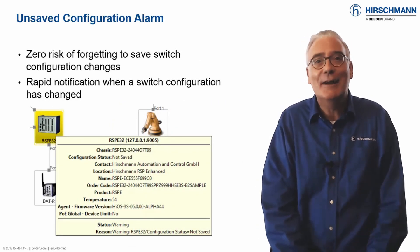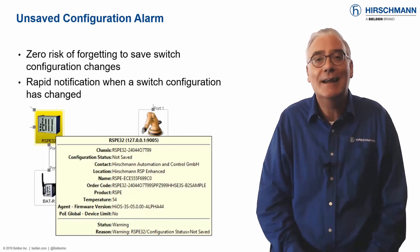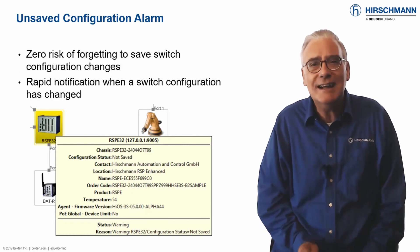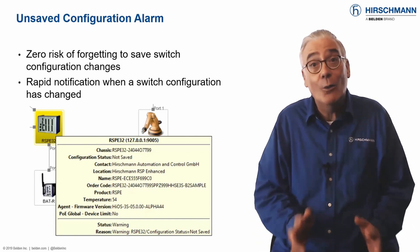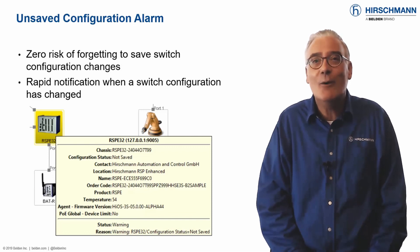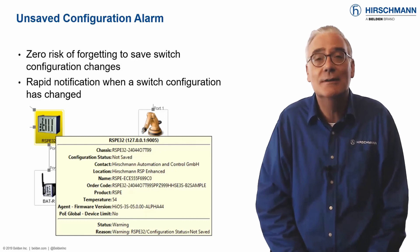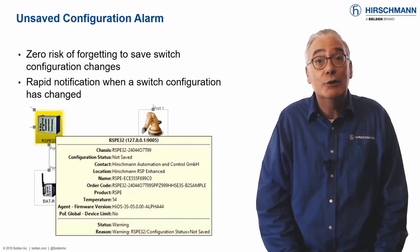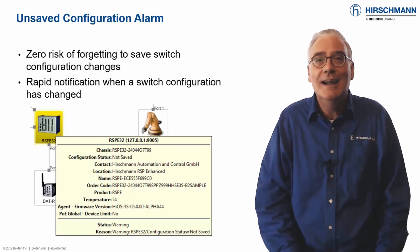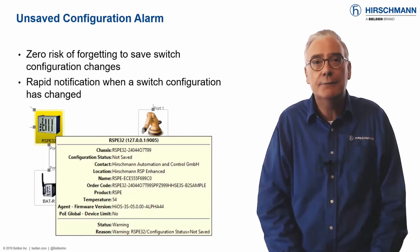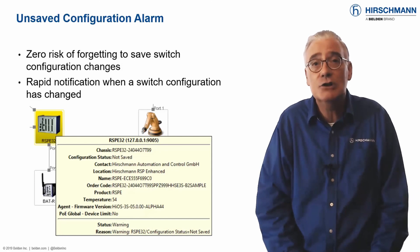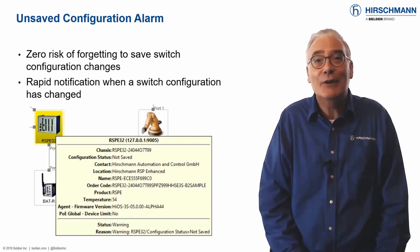There is a well-known scenario faced by most network administrators at some point in their careers. You spend some productive time working on your network. When you are happy with the result, you go home. On the way home, you have a nagging doubt about whether you saved the new configurations in the switches. Do you go back to work, or do you chance it until the next day? Industrial HiVision has a warning status for an unsaved device configuration, and it's enabled by default. There's a visual indication for each device that has an unsaved running configuration. So you never again need to worry that you've forgotten an important part of the configuration process.